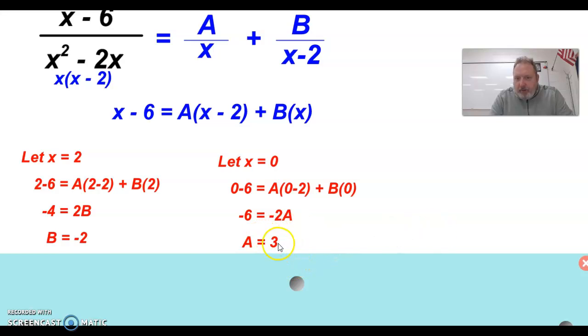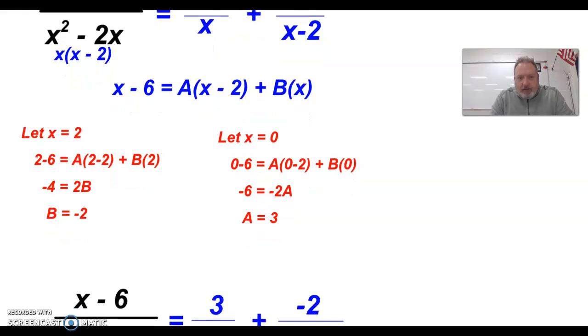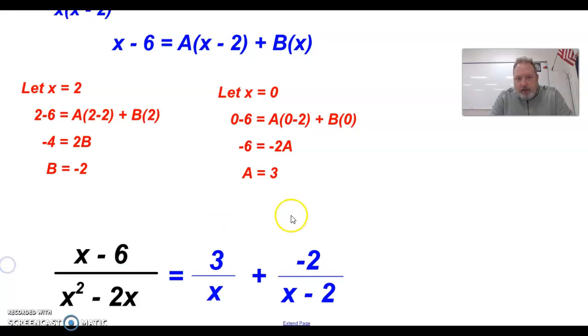Once we have our values for A and B, we are just about finished with this problem. Our final step is to take those two values and write them back in. So we have our original fraction, x minus 6 over x squared minus 2x. And I will replace A with its numerical value of 3 and B with its value of negative 2. And now I have these two fractions, the two parts that make up the whole. The next slide, we're going to do another example of this just so we have the practice and you see it. The more you do it, the more comfortable you get with it and the faster, a little more streamlined the process gets.